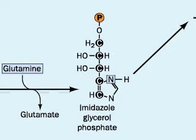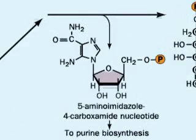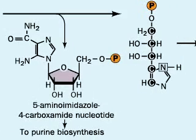Glutamine contributes nitrogen to one part to make imidazole glycerol phosphate, while the remaining portion may enter the pathway for purine biosynthesis.